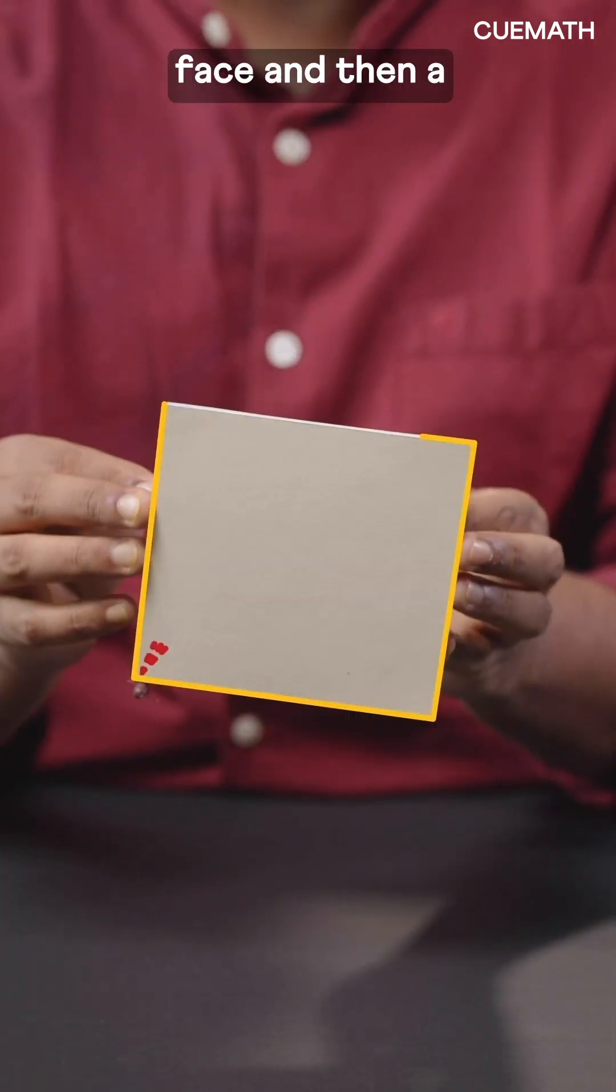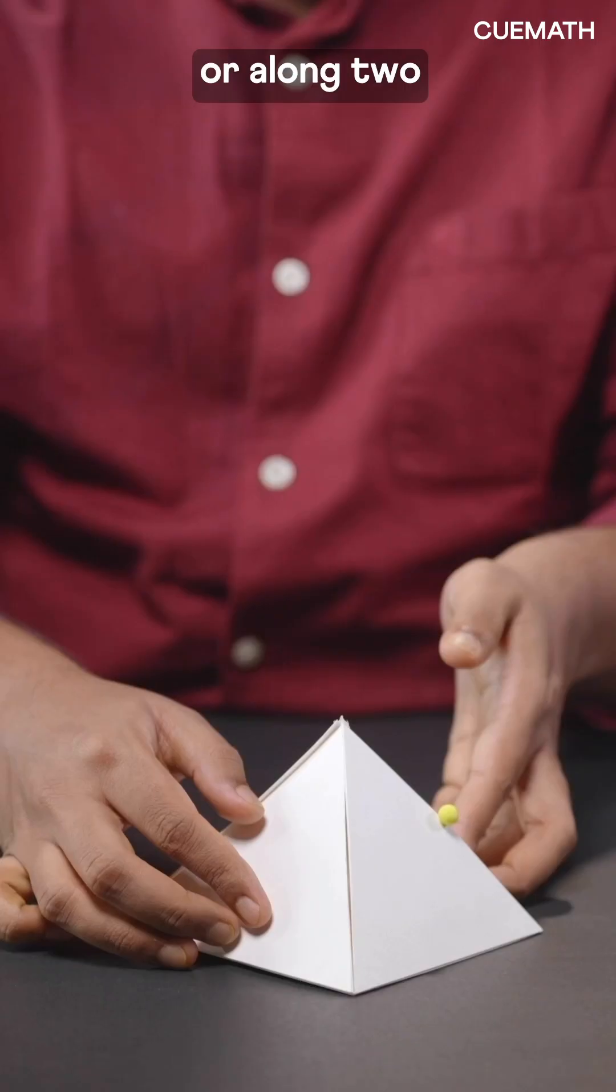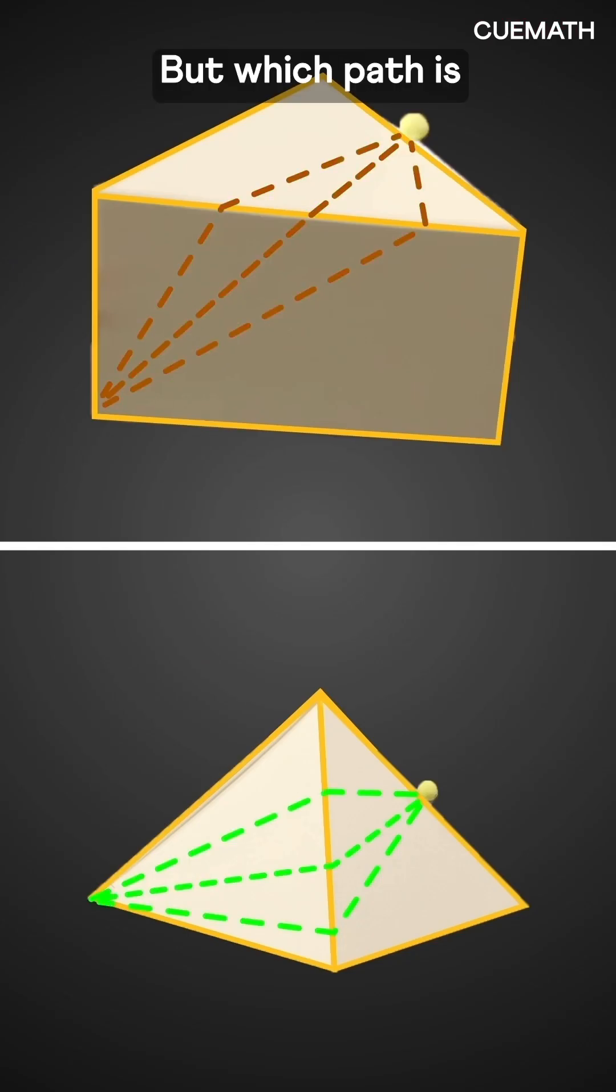It can travel along the square face and then a triangular face, or along two triangular faces. But which path is the shortest?